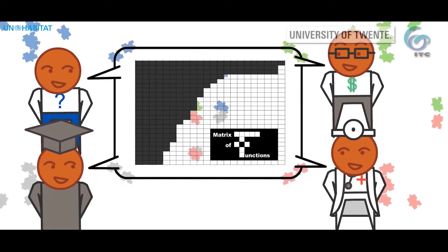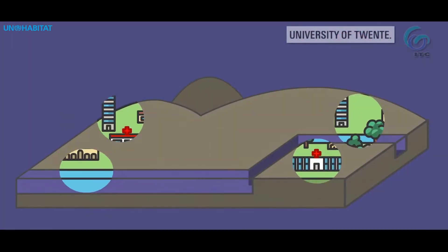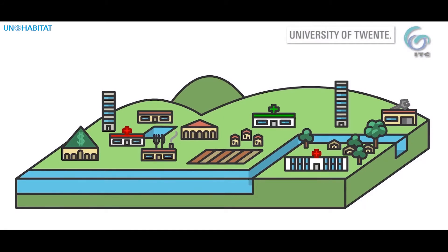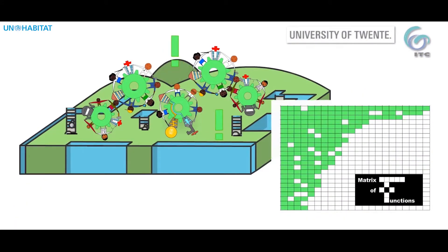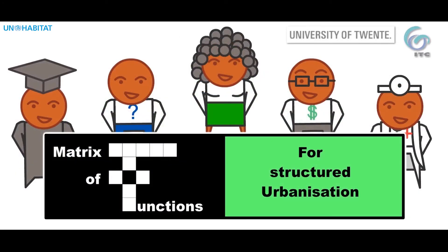It gives maximum insight with easily available data and underpins spatial development scenarios. The matrix of functions gives a shared and factual understanding of the spatial structure of the settlements in a country to plan for urbanization.